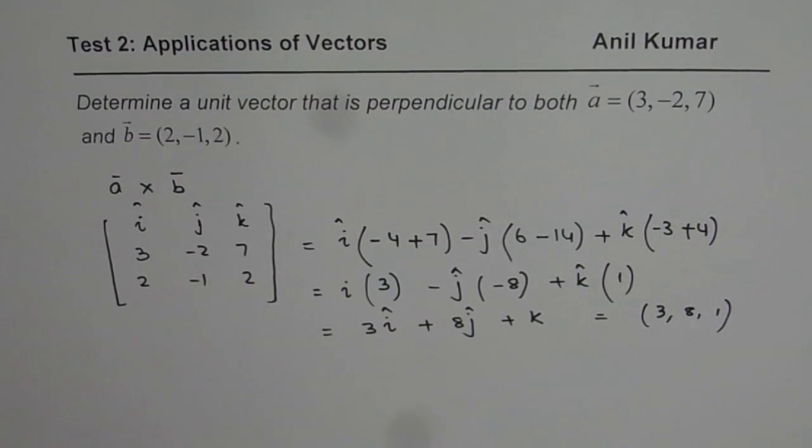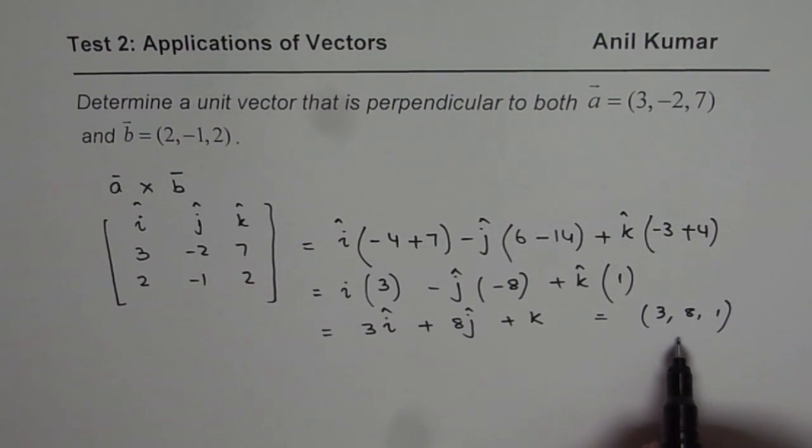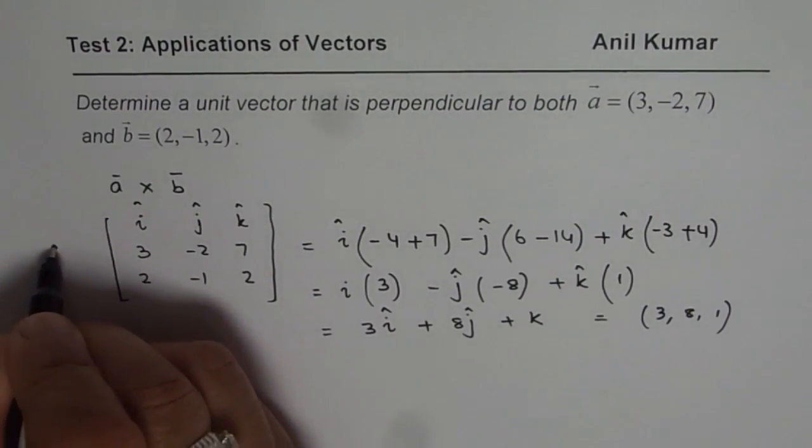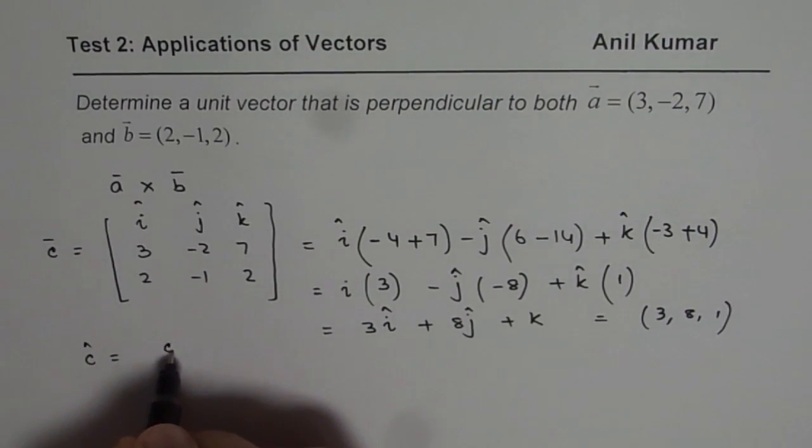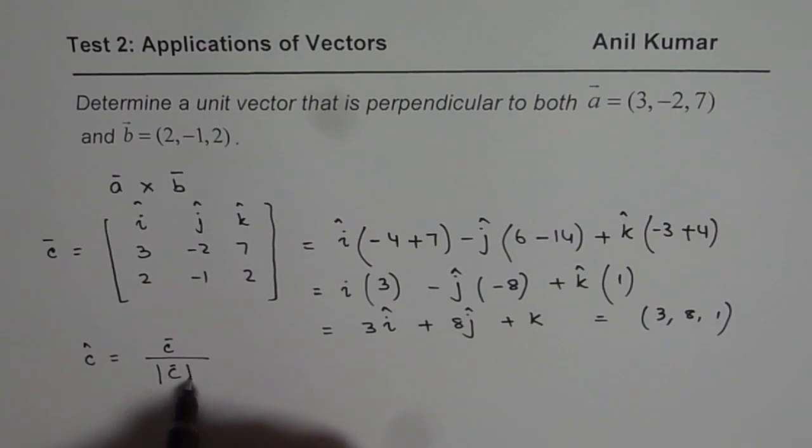Now you need a unit vector. So how do you get a unit vector of this? So let us say this vector is c for us. To get the unit vector c, we have to divide the vector by its magnitude. So divide this by magnitude.